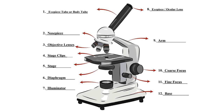Here are the coarse and fine focus knobs. The coarse focus knob is good for getting an initial view, and the fine focus knob moves the stage in smaller gradations for precise focusing. The illuminator is a light source located beneath the stage that provides illumination for the specimen. And then there is the base. These are the main parts of the compound microscope — depending on its type and complexity, there can be additional features.